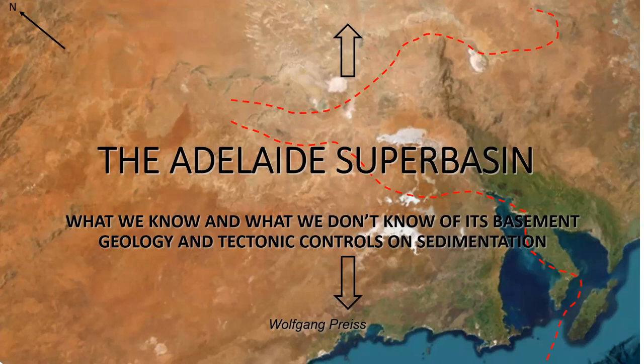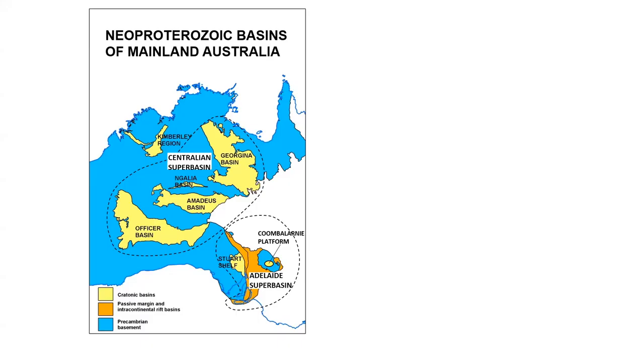Here on this map, which I've turned around about 45 degrees from the way we normally view it, I've similarly outlined roughly the area that we think of as encompassing the Adelaide Superbasin. The reason for turning it around will become clear later.